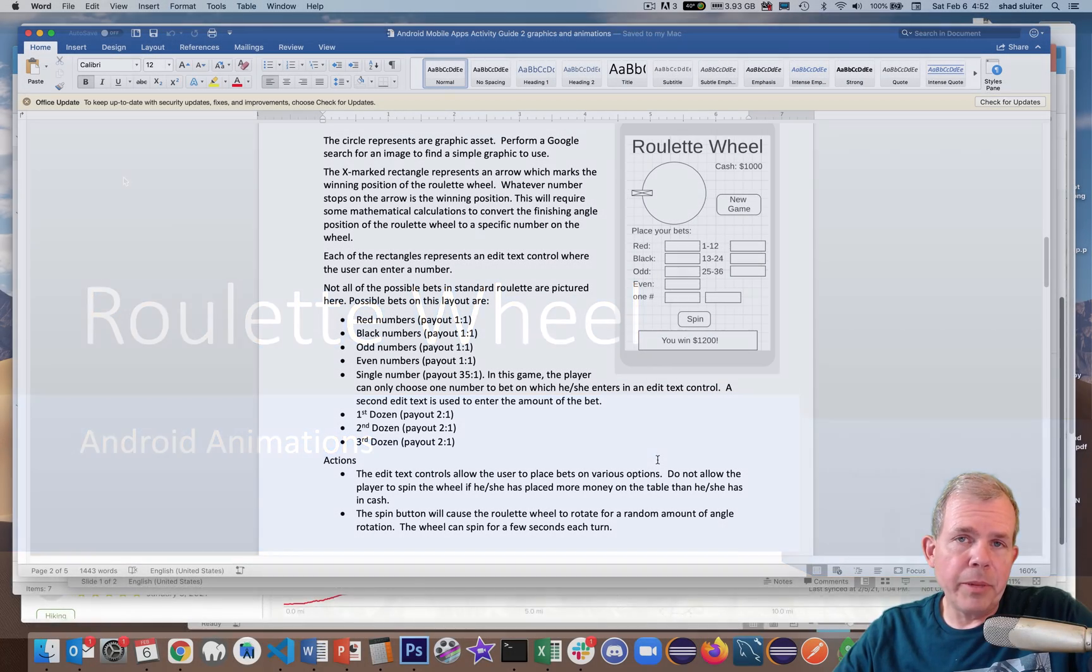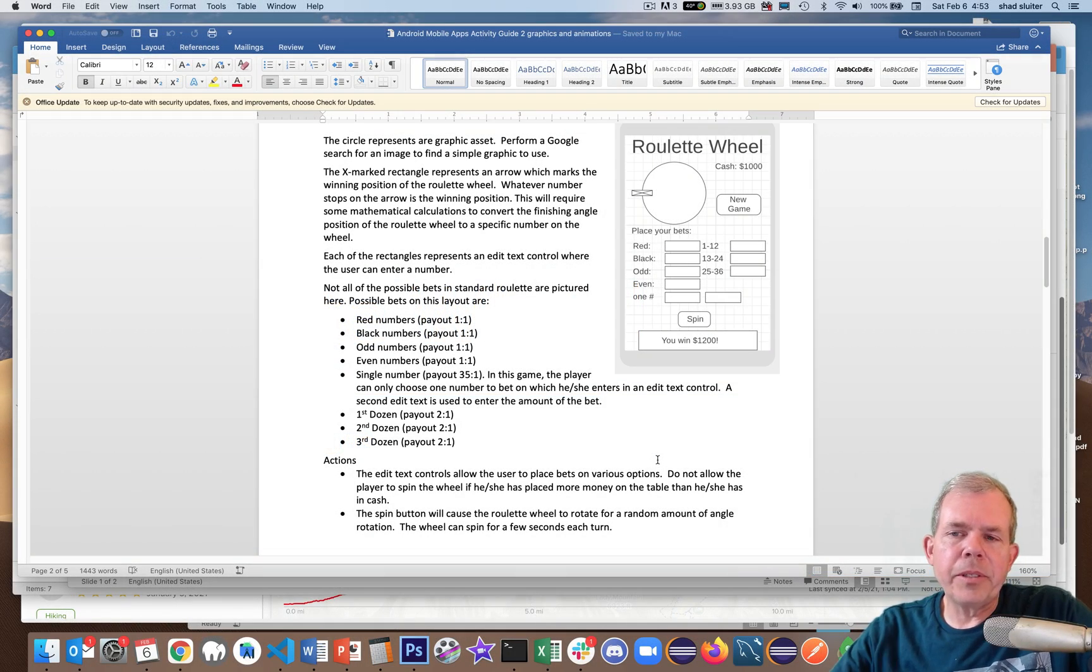So here's the assignment that we're talking about. This is a roulette wheel game that's going to show a wheel that spins, and then various places where you can place your bets, and then when the winnings are announced, you can calculate the actual gain of the bet. So the challenge here is to figure out where the wheel stops and how to know what number it stopped on.